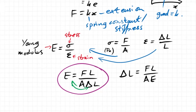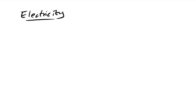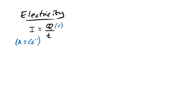For electricity, current is rate of flow of charge: I = Q/t, in amperes (coulombs per second). Q is charge in coulombs, t is time in seconds.